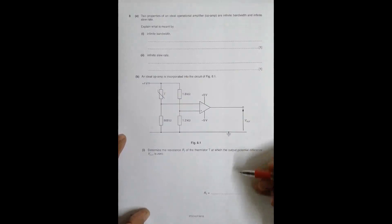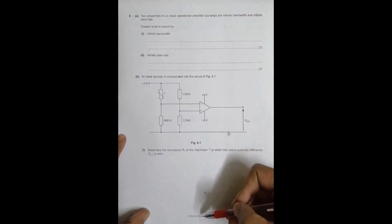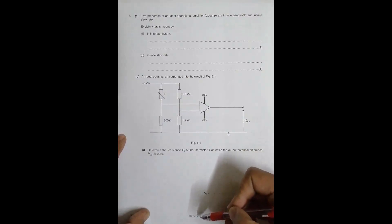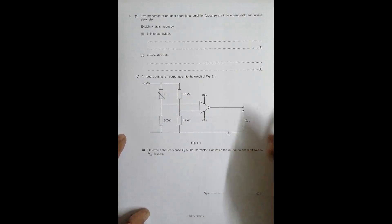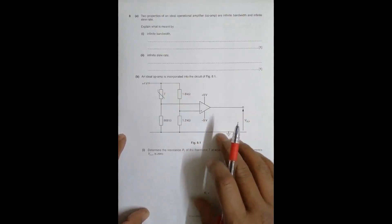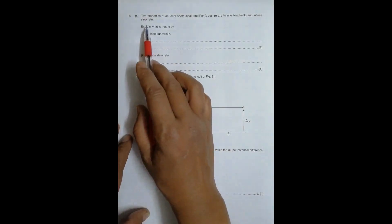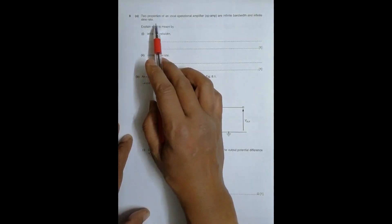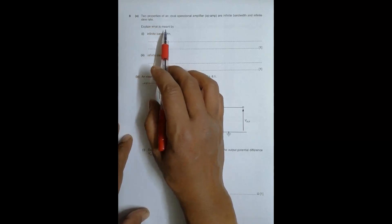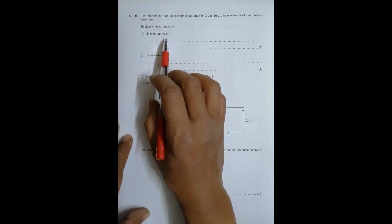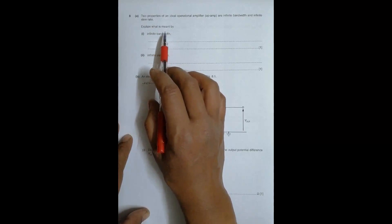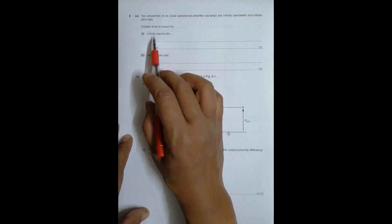Hello folks, this is question 8 from the 2018 February/March paper. The first part asks us to state two properties of an ideal op-amp and explain their meaning.